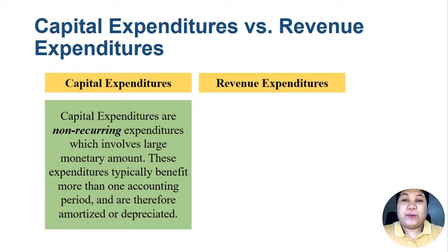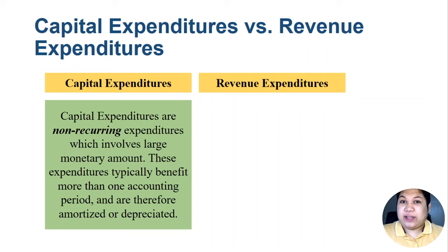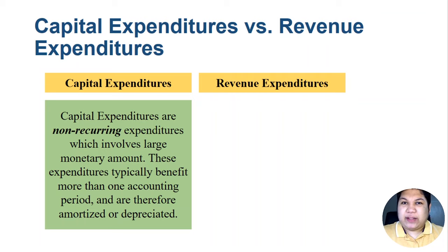For example, if you acquire or construct a new building, that is a capital expenditure. Or when you acquire a large machine or equipment which will be used for the business not just for a year but for two or more years — say five years — that is also a capital expenditure. Developing a patent, a right, or spending on research and development is also a capital expenditure.